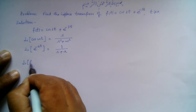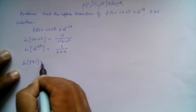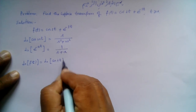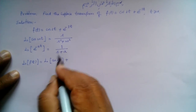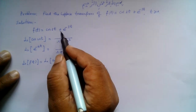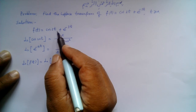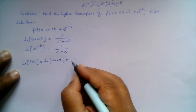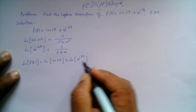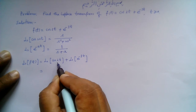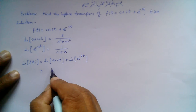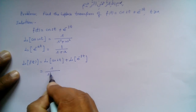The Laplace transform of f(t) equals the Laplace transform of cos(2t) plus the Laplace transform of e^(-3t), by the linearity property — the Laplace transform of a sum of two functions is the sum of their individual Laplace transforms. For cos(2t), ω = 2, so this gives s over (s² + 2²), which is s over (s² + 4).